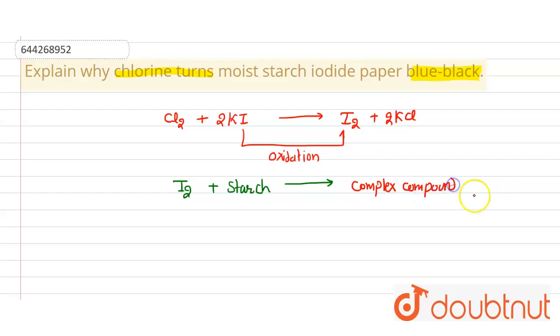It is deep blue colored. So due to the formation of this deep blue colored compound, the moist starch iodide paper is converted into blue-black. This is our answer.